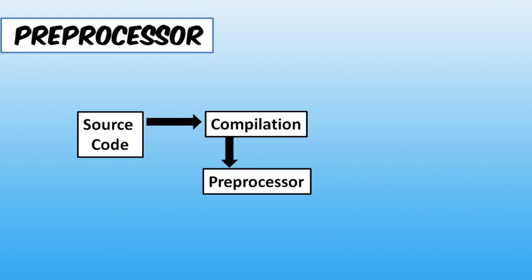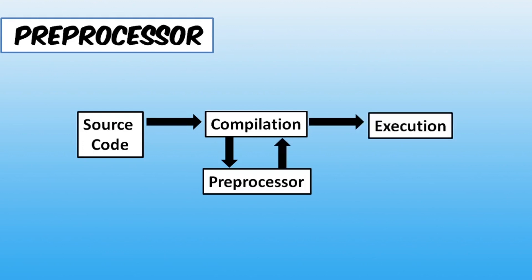The preprocessor will remove all the comments as we don't require comments for compilation. Furthermore, it also copies the code written in the header file to the main file. So after the comments are removed and the codes of header files are copied, then it goes for compilation and then execution.